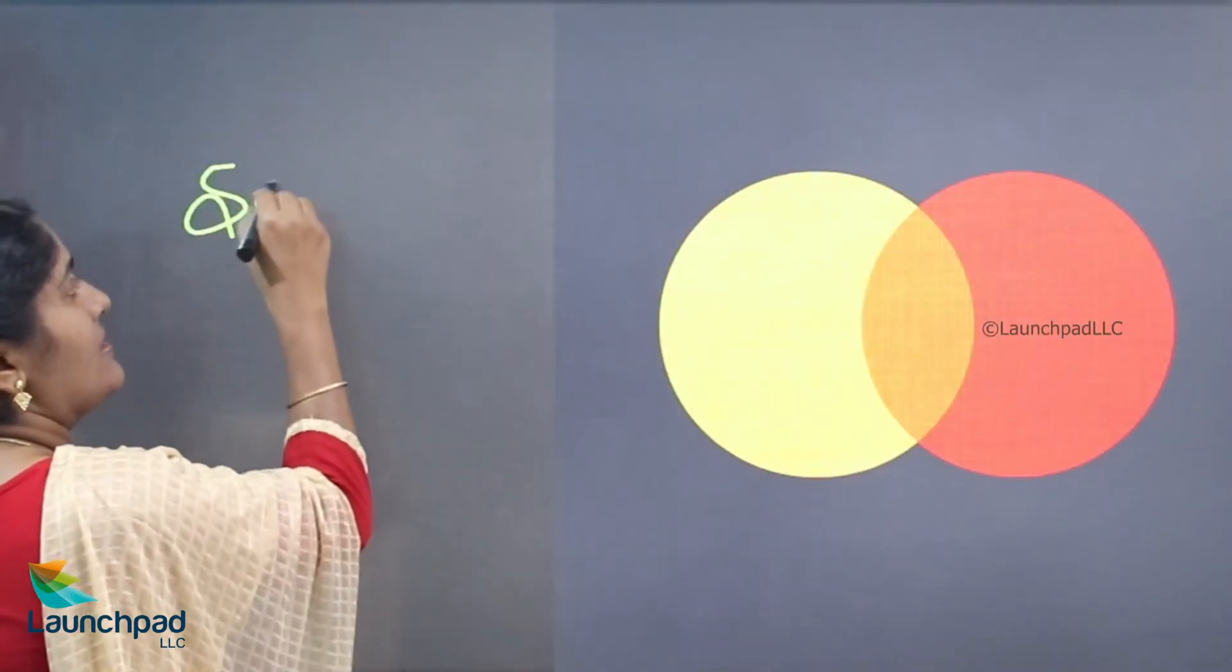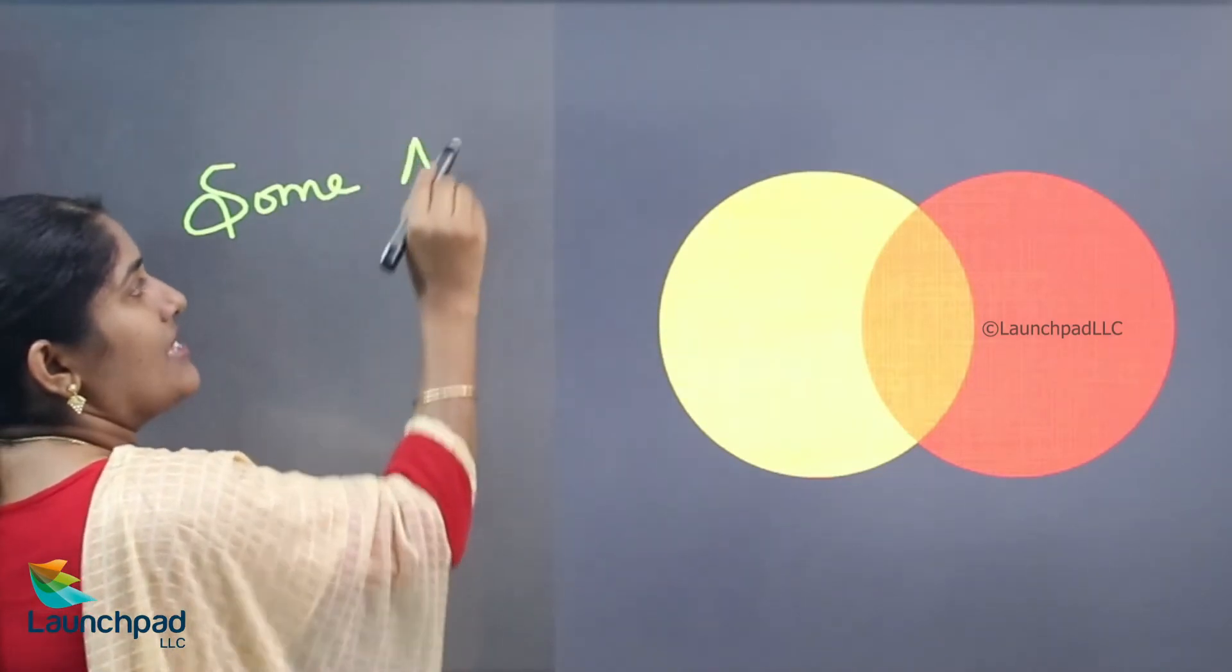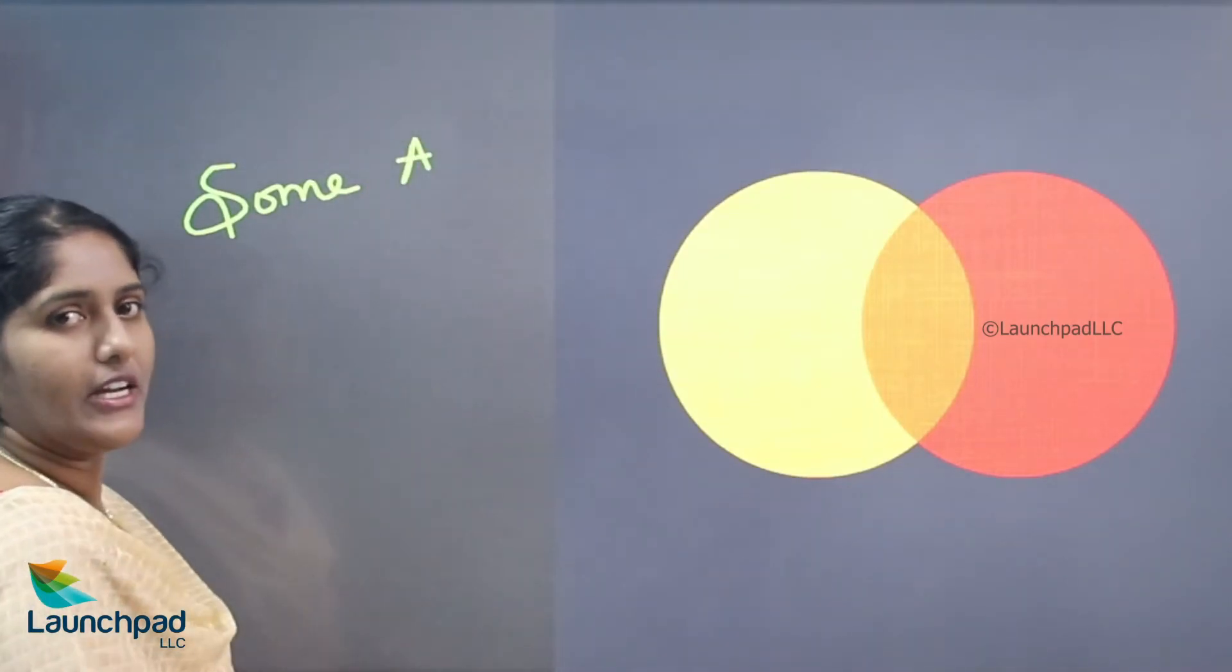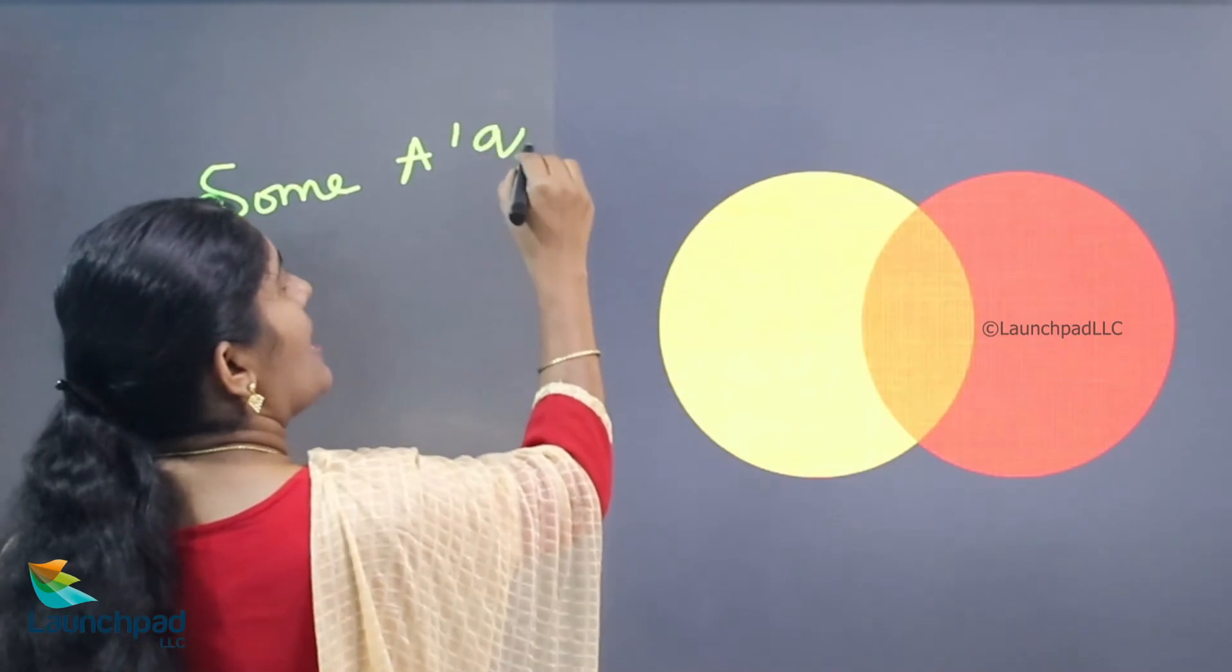Some A's are C? No, all A is C. So we can see the example one by one. Now your next statement: some. Some means how we can draw the diagram for the given statement. Some A's are B's.